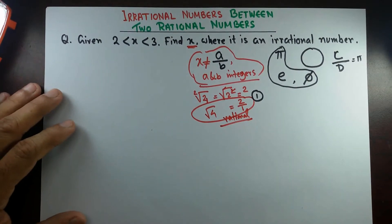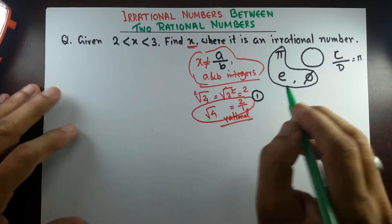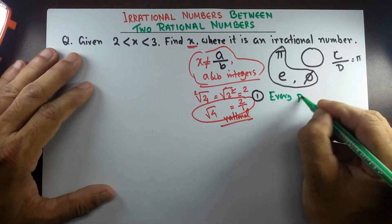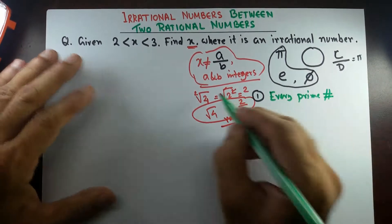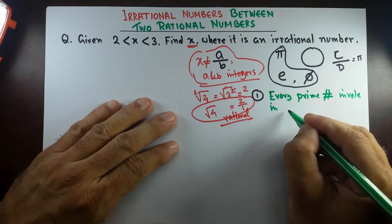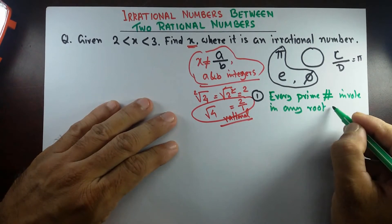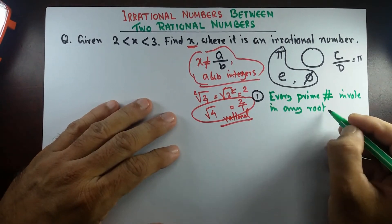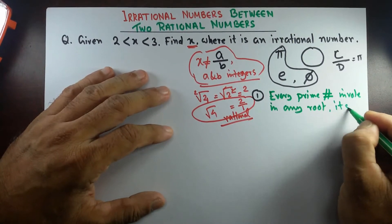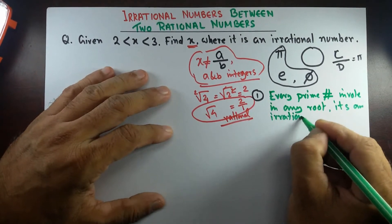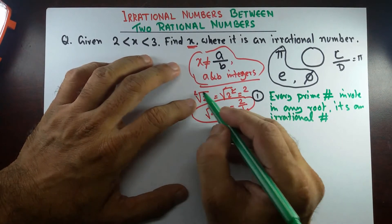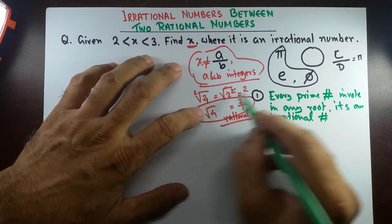Now, the thing I'm going to discuss is the properties of irrational numbers. Every prime number involved in any root is an irrational number. Here, 2 is a prime number, but 4 is not — 4 is a perfect square, so it can be taken out of the square root. So 4 is not irrational, but if I have square root of 2, that cannot be taken out of the root, so it is an irrational number.